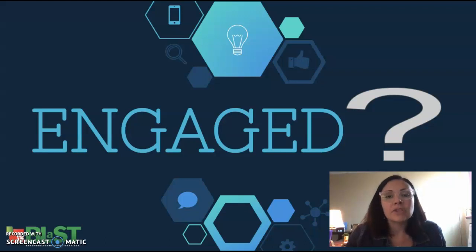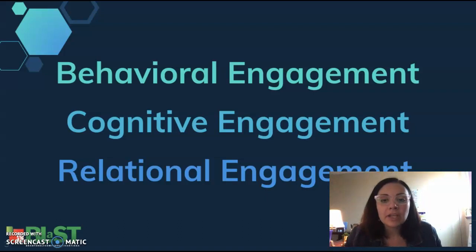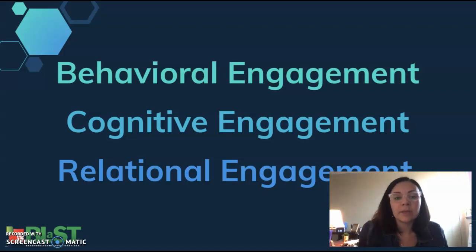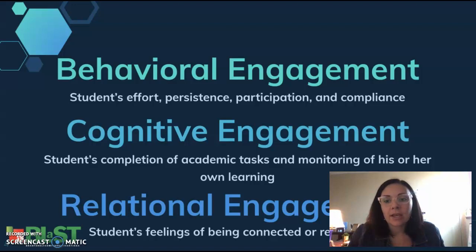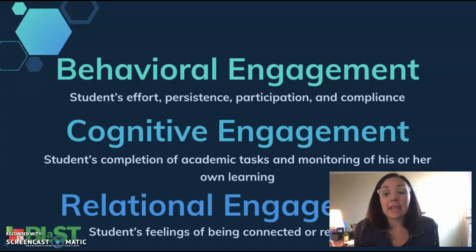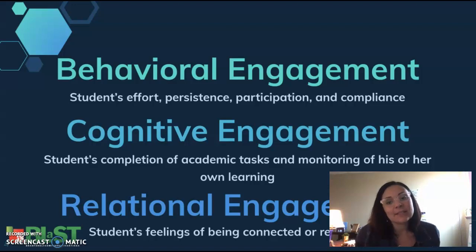A student can look engaged but not really be learning anything. So what we've come up with are three types of engagement: behavioral engagement, cognitive engagement, and relational engagement. Behavioral engagement is simply the student's efforts, persistence, participation, and compliance in your lessons — are they behaviorally engaged, are they not acting up?